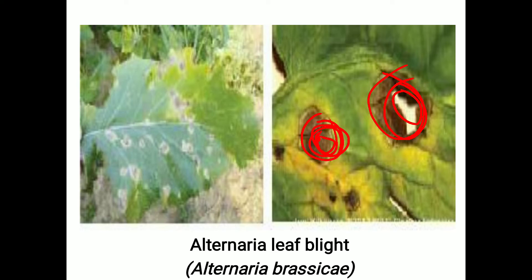If infestation takes place on the pods, pod formation does not occur properly, and seed formation inside the pod also does not take place regularly. In the case of Alternaria raphani species, they first attack on the seedling leaves as yellow raised spots. These are the typical symptoms of Alternaria leaf blight.